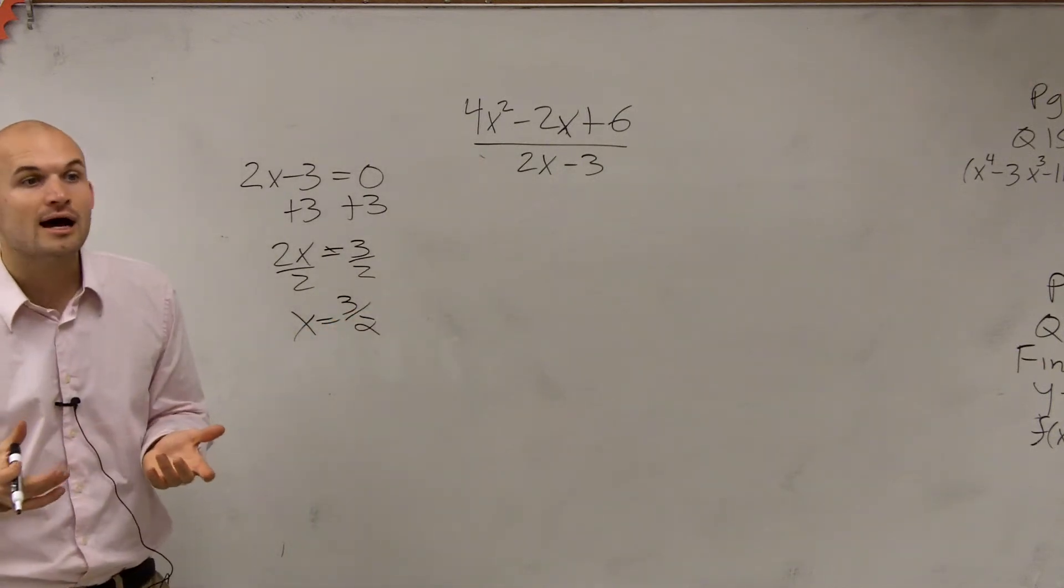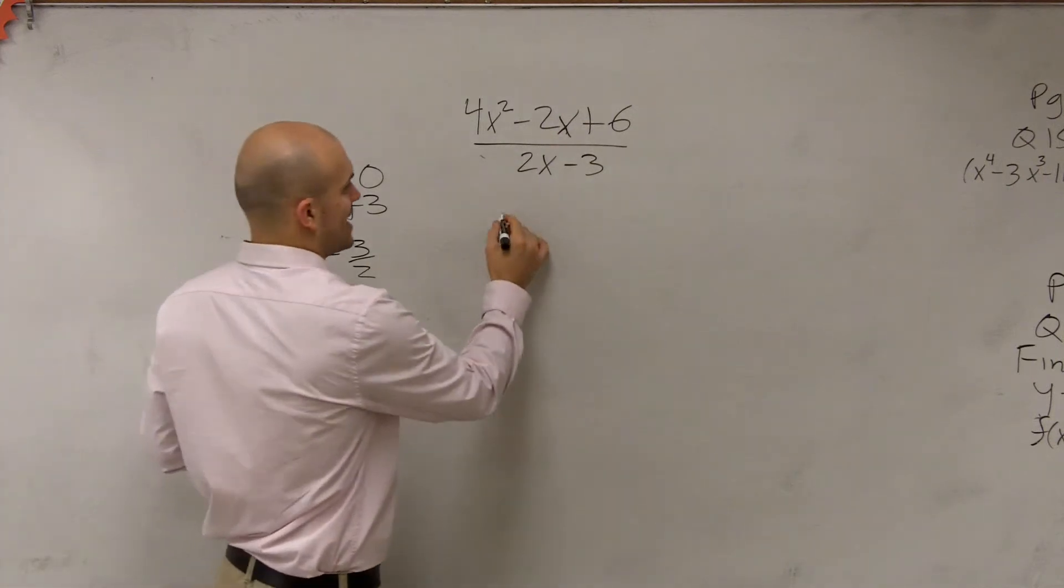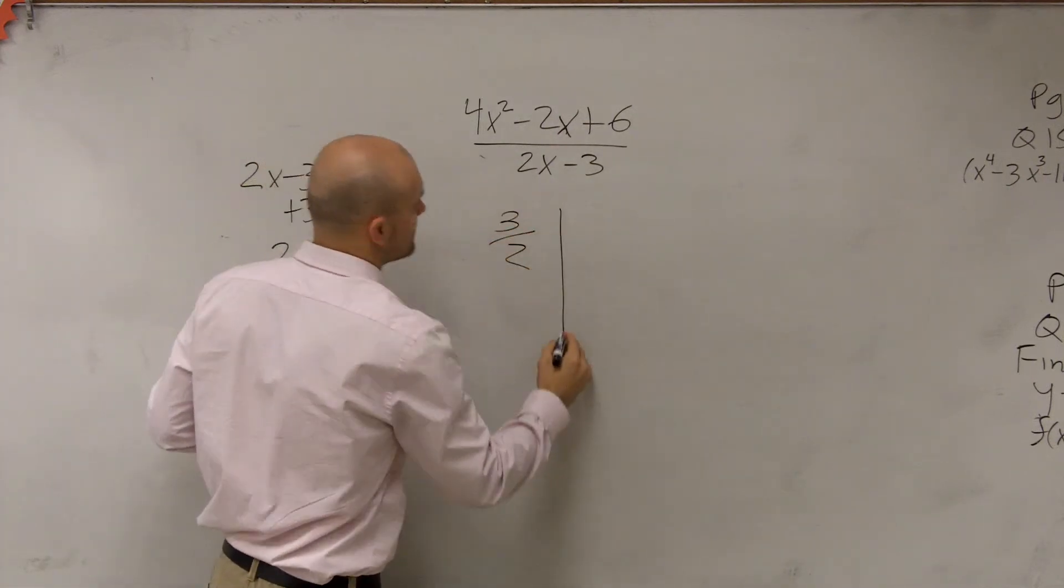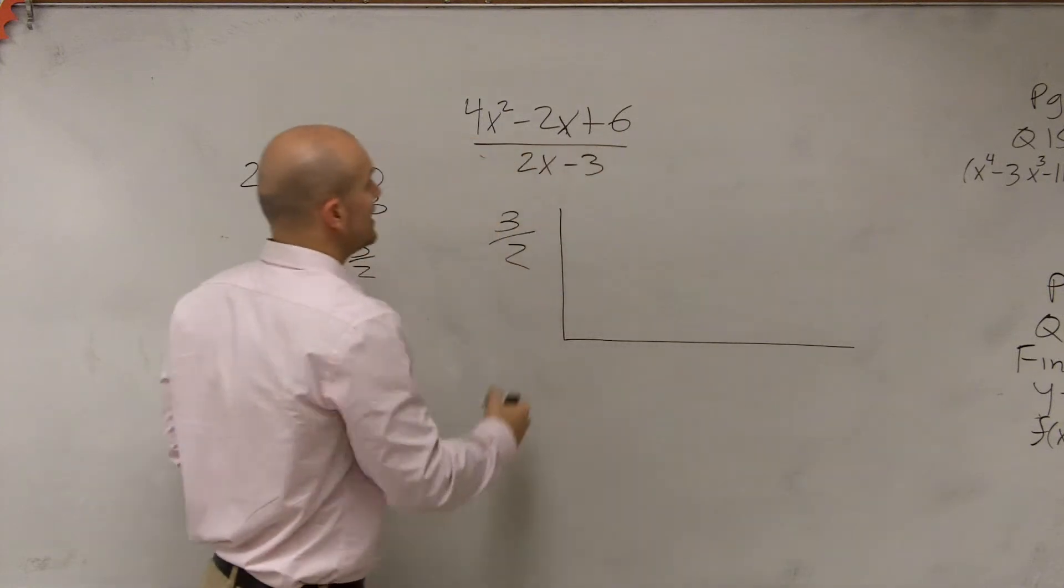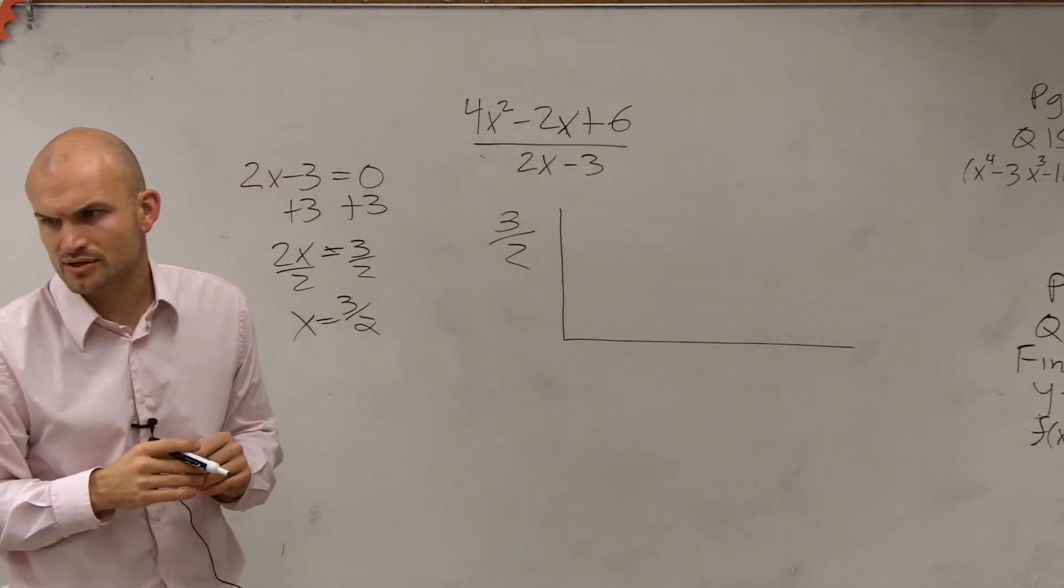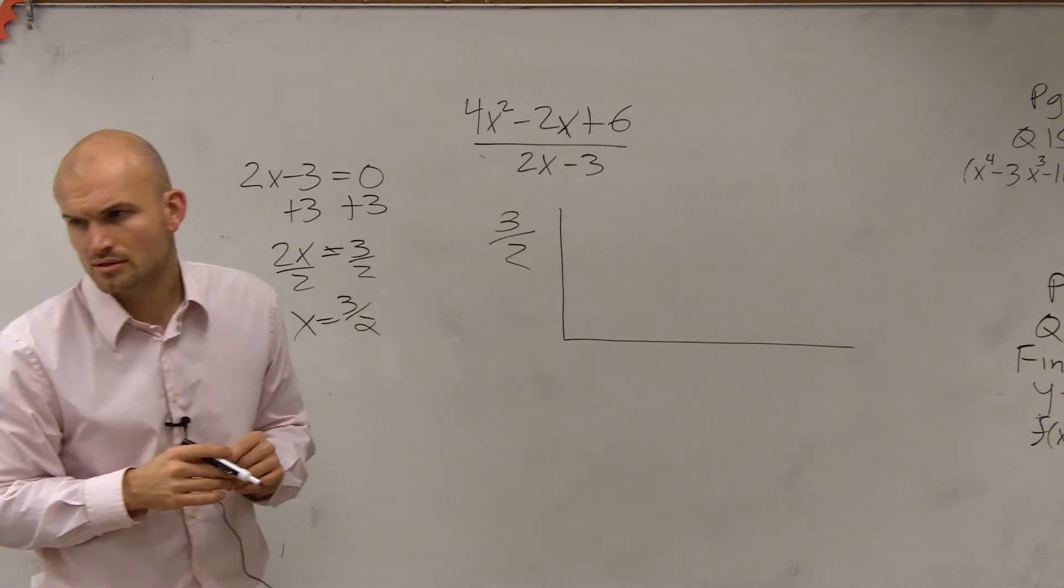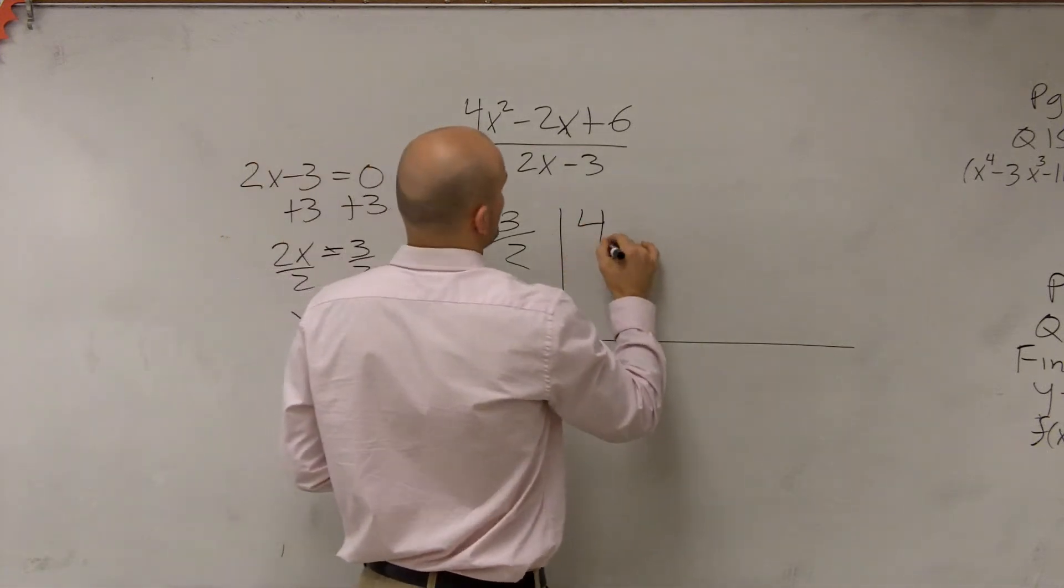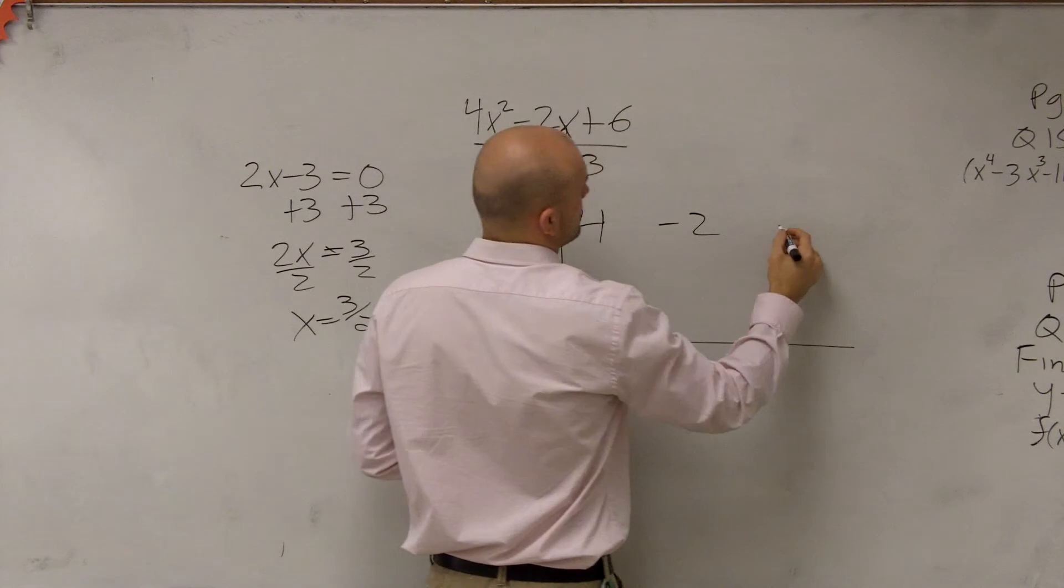So yes, now I'm going to be dealing with fractions. But I have 3 halves on the outside. Then I go through with my coefficients. Is that correct? 4x squared or is it 4x cubed? 4x squared. So you do 4, negative 2, and 6.